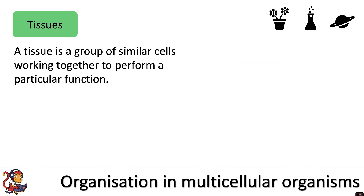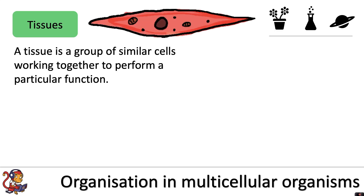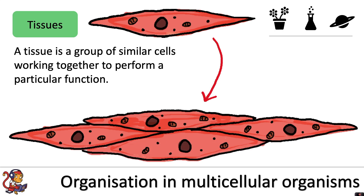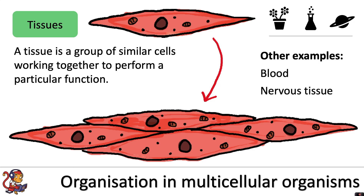The next level up is tissues. A tissue is a group of similar cells working together to perform a particular function. For example, here we have a muscle cell, and a muscle tissue would be a group of muscle cells working together to contract and relax to cause movement at a particular joint. Other examples of tissues include the blood, as well as nervous tissue.